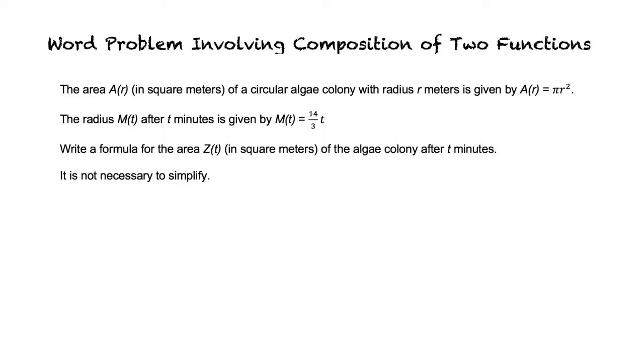We're given the area as a function of radius r meters: A(r) = πr². We're also given the radius as a function of time: M(t) = (14/3)t.